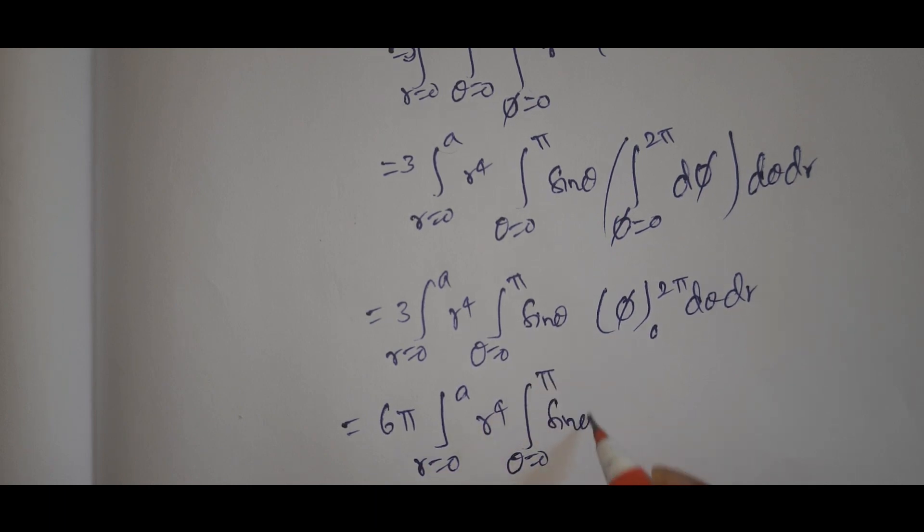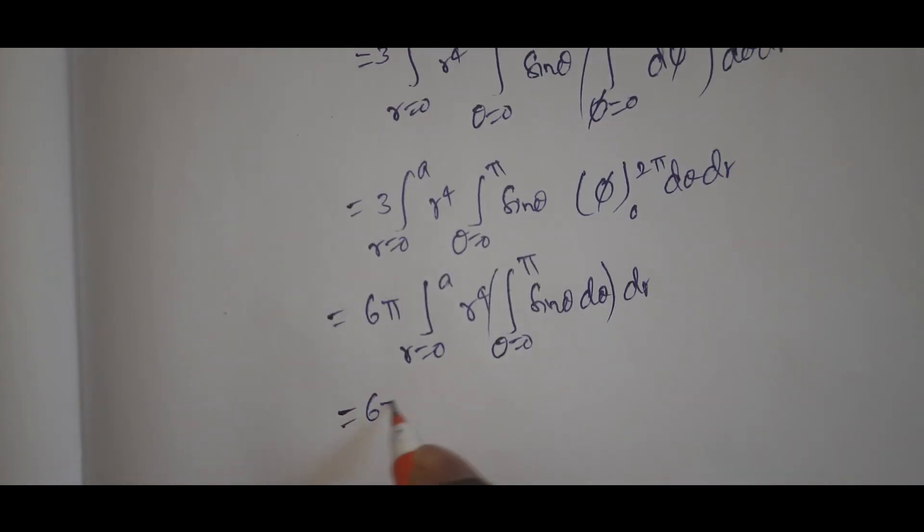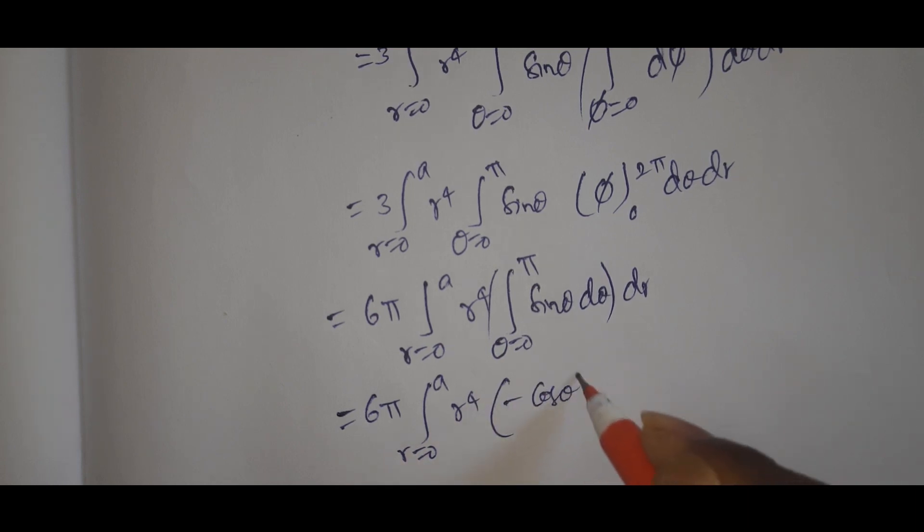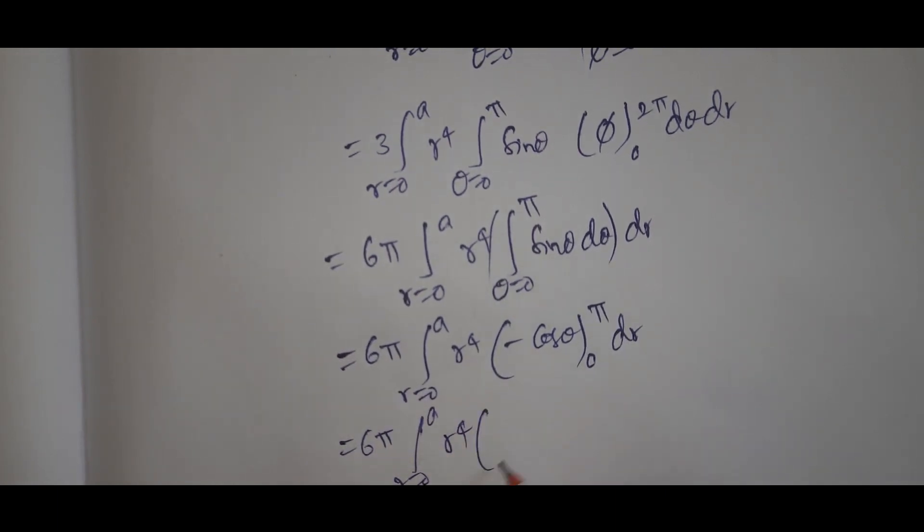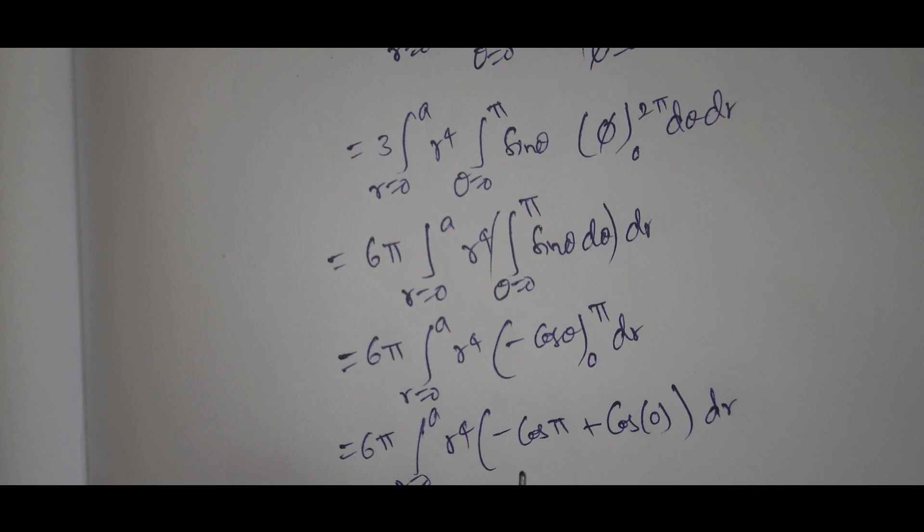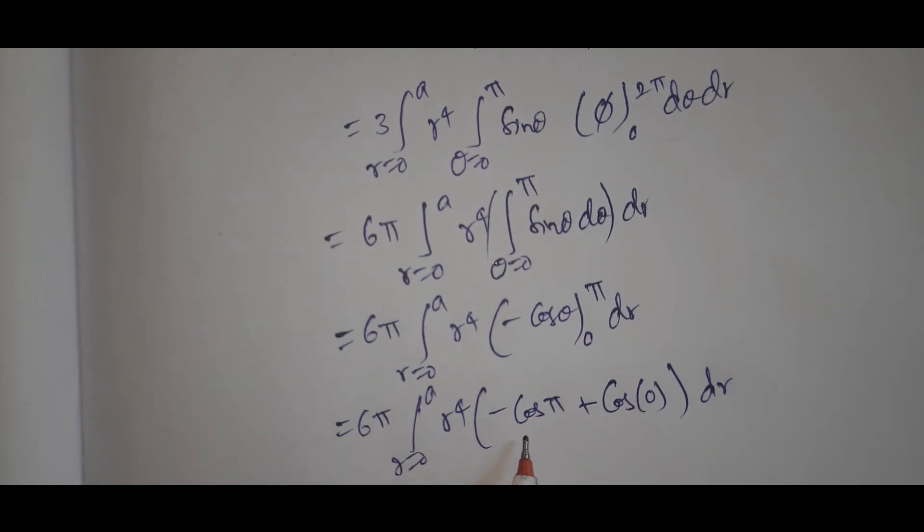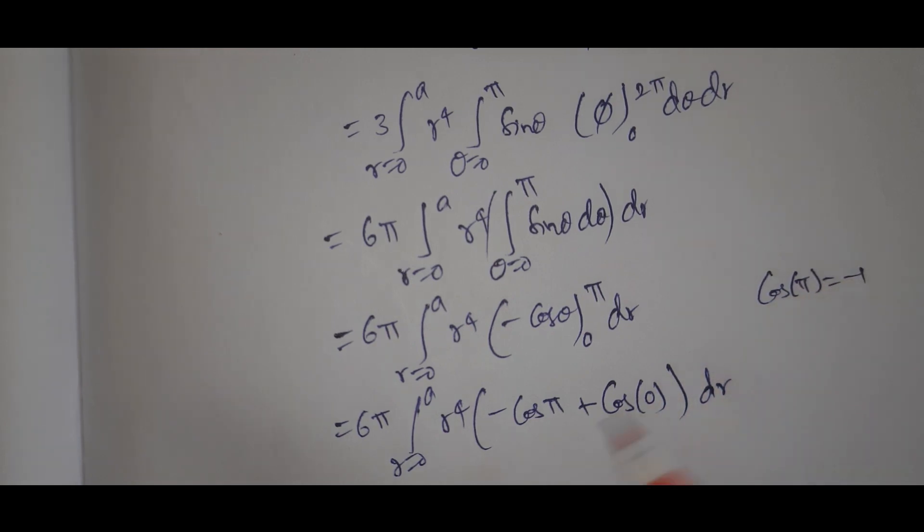So 2pi times 3 equals 6pi. Now we have 6pi times integral r equals 0 to A r to the fourth, integral theta equals 0 to pi sine theta d theta dr. Integral sine theta is minus cosine theta, evaluated from 0 to pi.